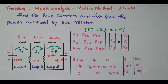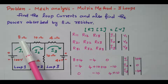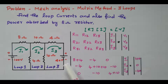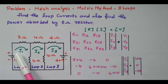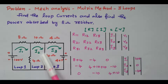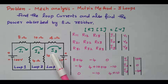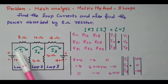Consider this network. In this network, we need to find the loop current and also the power absorbed by this 8-ohm resistor. Here there are two voltage sources available: 100 volts and 40 volts. By inspecting this diagram, we can easily identify the first loop with current I1, the second loop with current I2, and the third loop with current I3. The current direction is uniformly taken — all three loop currents are flowing in the clockwise direction.